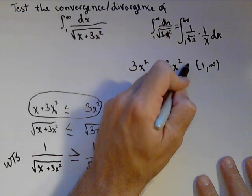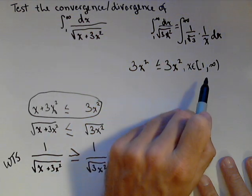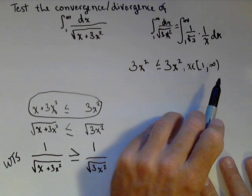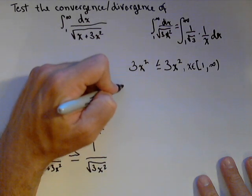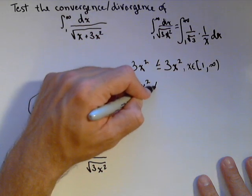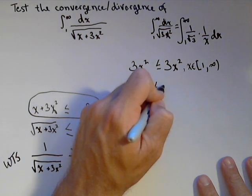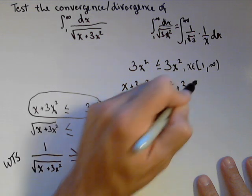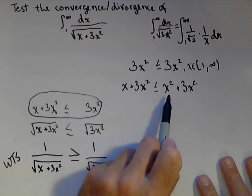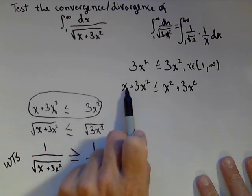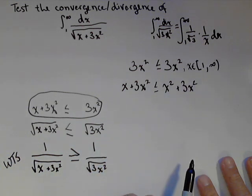That interval is actually important because we know that everything we're putting in for x is one or bigger. So what I'm going to do is I'm going to add x to this side plus three x squared, less than or equal to, and I'm going to add an x squared to this side. This is going to be what makes this work. This is a true statement, and x squared is bigger than or equal to x on one to infinity. And adding the same thing is still going to be bigger.